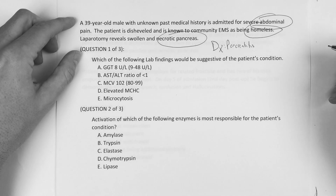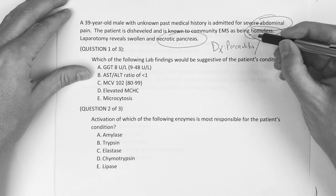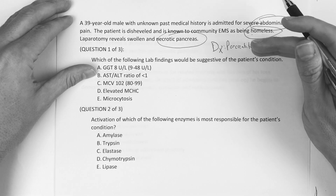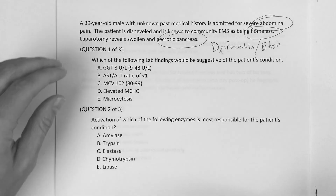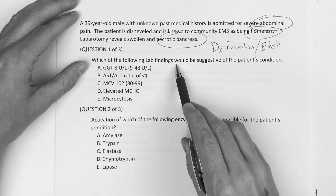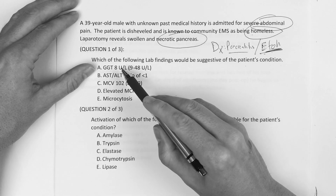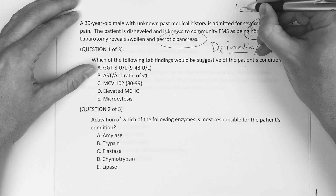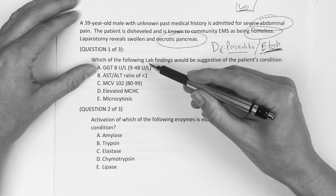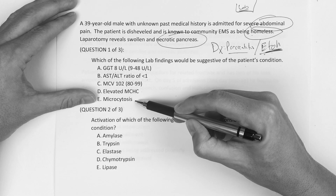The diagnosis is pancreatitis. We also have to suspect that alcohol might be playing a factor - the guy's living on the street. So which lab finding would be most suggestive of pancreatitis and alcoholism? Is it a GGT of 8? Is it an AST to ALT ratio of less than 1? Is it C, an MCV of 102? Is it D, an elevated MCHC? Or is it E, microcytosis?